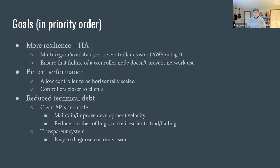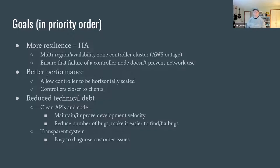In terms of reducing technical debt, we want to do a few things. We want to maintain and improve our APIs to keep our development velocity up, reduce the number of bugs, make it easier to find and fix bugs, and make sure that we have a transparent system. Making sure that we can figure out when our resilience and performance fail — why did this go down, why did the data stop flowing here, how is this affecting the end user?